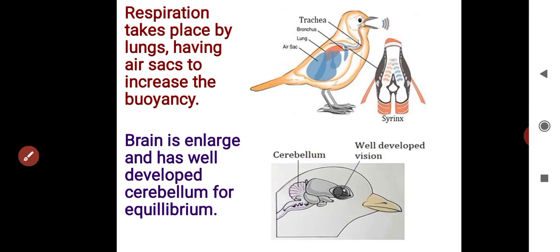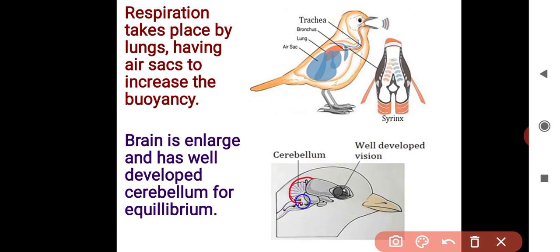The brain is enlarged and has a well-developed cerebellum for equilibrium. This is the image of the head of the bird showing the cerebellum. Birds also have well-developed vision.